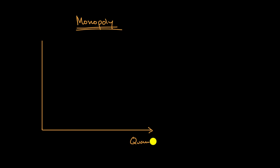In this video, we're going to think about the economic profit of a monopoly firm. To do that, we're going to draw our standard price and quantity axes — quantity on one axis, and price in dollars on the other.